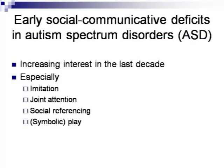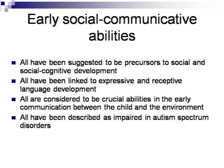There is an increasing interest in the last decade in early social communicative deficits in autism spectrum disorders, especially imitation, joint attention, to a lesser degree social referencing, and also play and symbolic play. All these abilities have been suggested to be precursors of social and social cognitive development, and they have all been linked to language development — both expressive and receptive. They are all considered to be crucial abilities in early communication between children and their environment, and they have all been described as impaired in autism spectrum disorders.